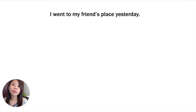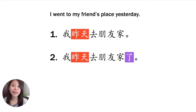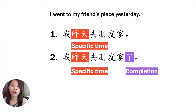Now let's check the differences between a sentence with 了 or without 了. For example, 'I went to my friend's place yesterday.' You can say 我昨天去朋友家, or 我昨天去朋友家了. What's the difference? The first one, we hear a specific time — 昨天. The second sentence gives more information: completion. So the scenario might be: when somebody questions 'Did you really go to your friend's place yesterday?' you reply 我昨天去朋友家了.